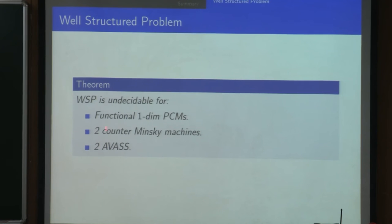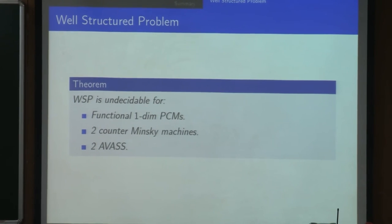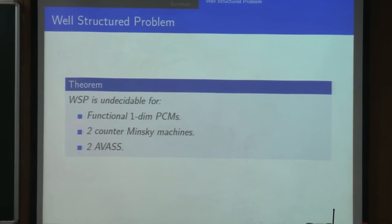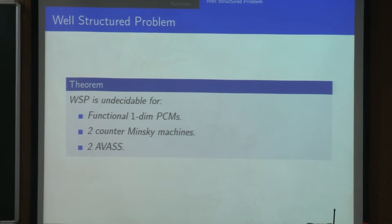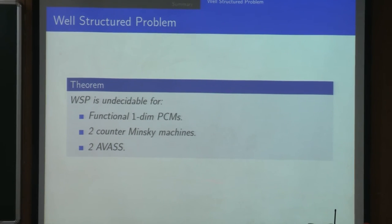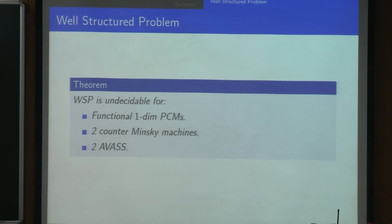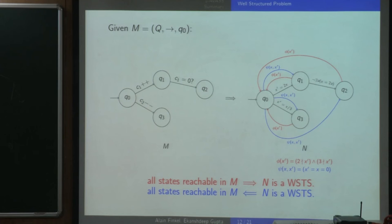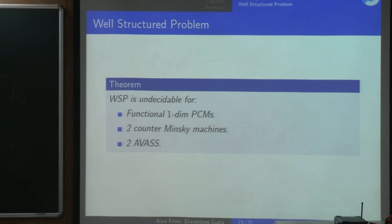The same is true for all these other classes—the proofs get more complicated but the idea is the same. The well-structured problem is also undecidable for functional one PCMs. Note that this reduction is not functional because phi is not a function—it is independent of the input. But there is a way to obtain undecidability for functional one PCMs as well. For two-counter Minsky machines and two AWAS, you also get undecidability.